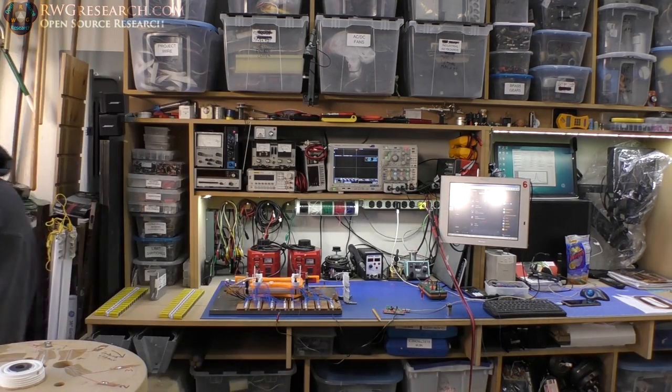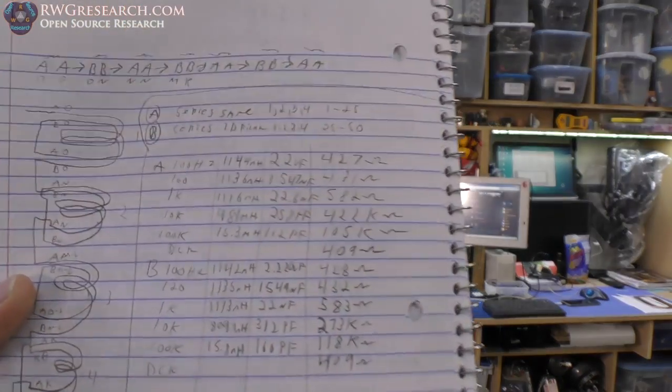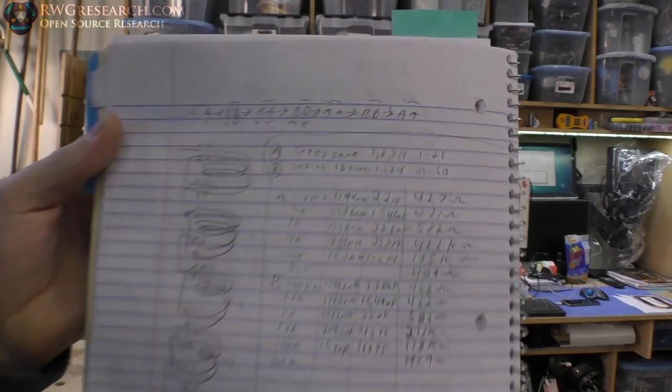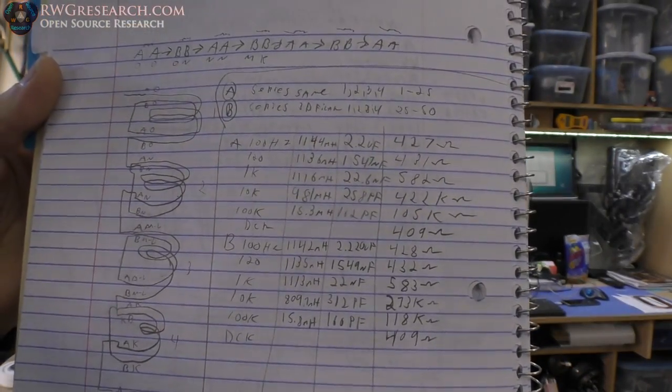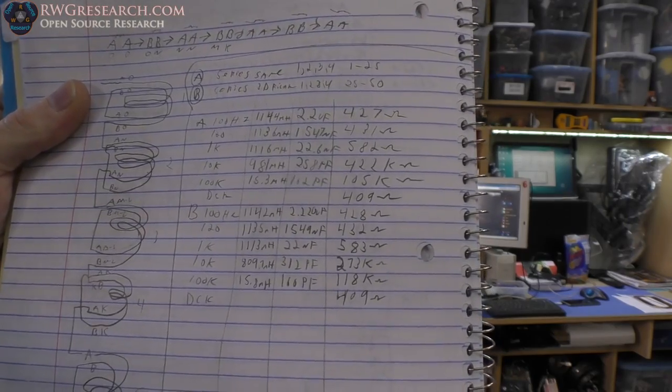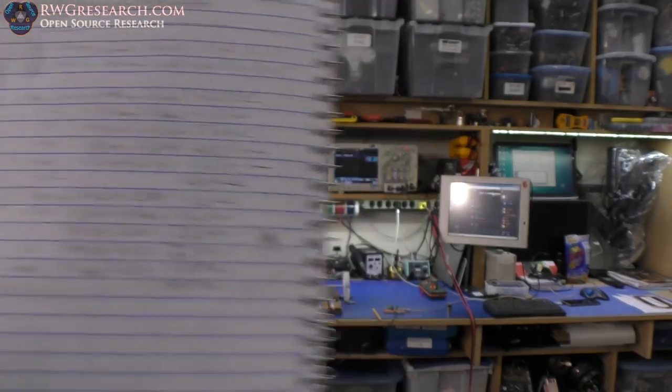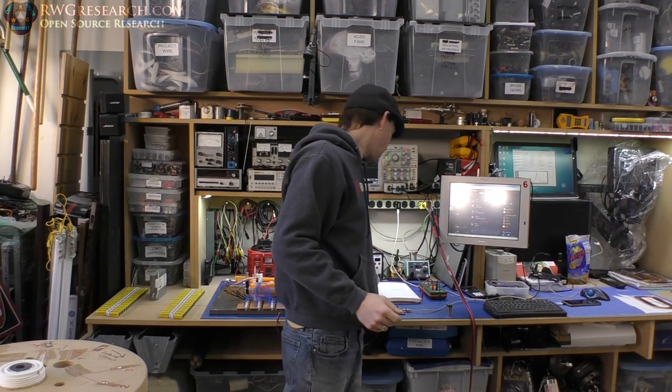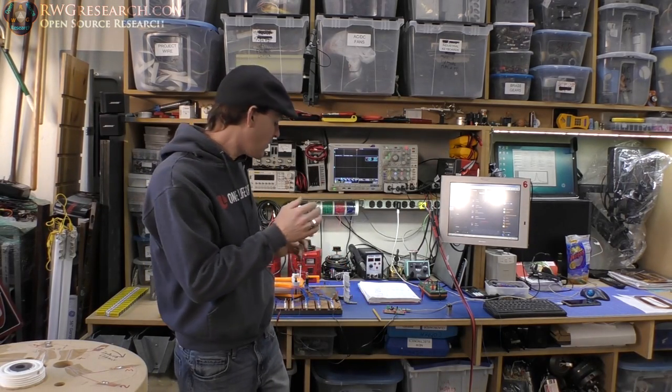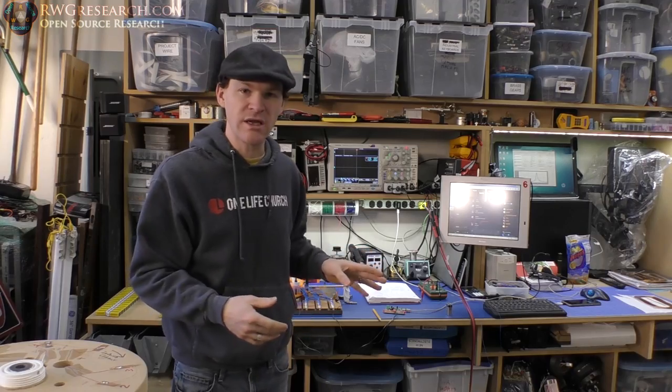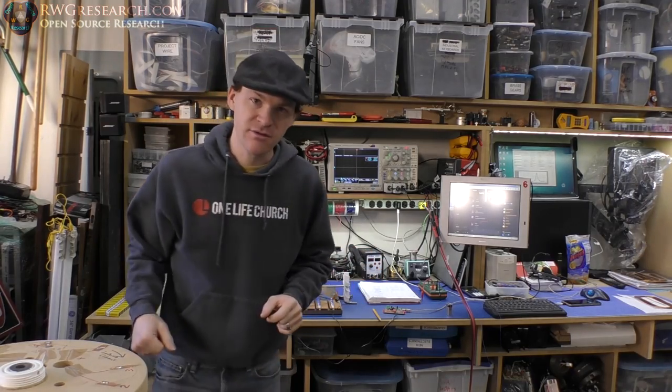So, let me show you the data. Here's the data. This is what it looks like configured in these certain ways. You can see that all the data is really comparable here. That's using the LRC meter. But today, what I want to show you is something else that we discovered along the way. Let me go ahead and show you some other really interesting things about this coil.